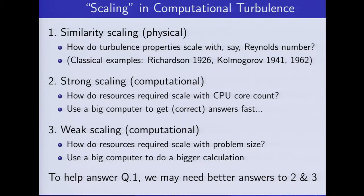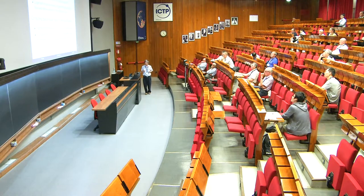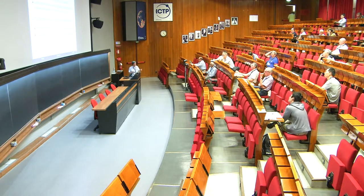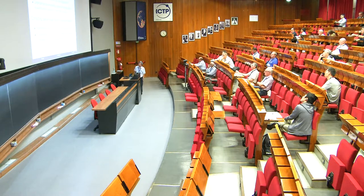In DNS, we find that to give better answers to questions about physical scaling, we need to figure out what to do with the other two types of scaling from a computing point of view. I'm going to talk briefly about two different algorithms. One is to track hundreds of millions of fluid particles — that's the Lagrangian viewpoint, which is very important for the study of dispersion. We have reasons why we need so many particles, and we have a paper on backward relative dispersion: instead of starting from a particle at a certain location and finding out where it goes, we ask where did it come from? We need a very large number of particles for that kind of work. We're also going to talk about passive scalars, relevant to the theme of turbulent mixing.